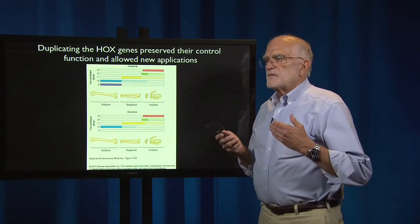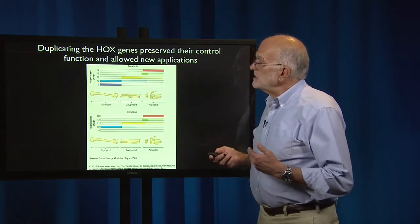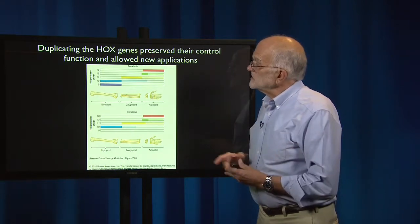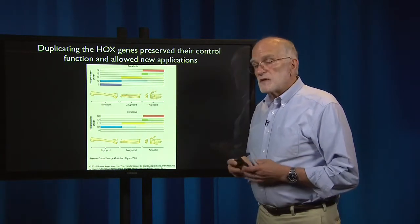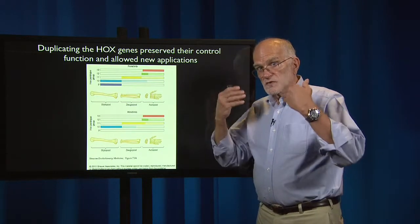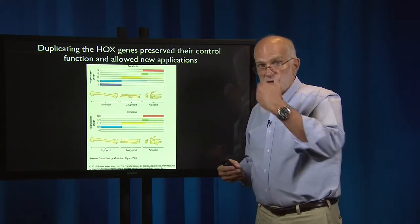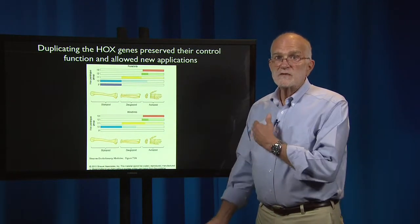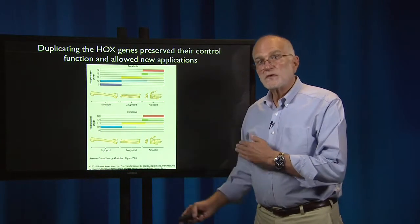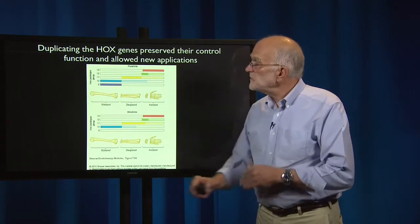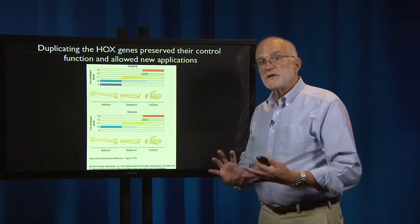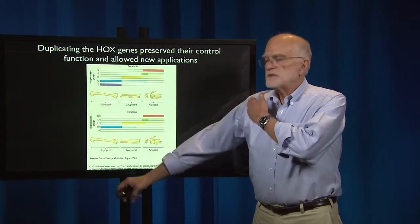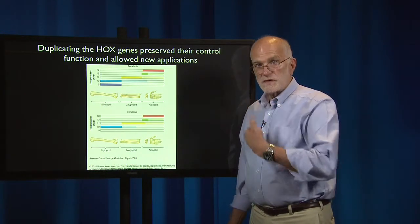Evolution took advantage of the existence of a developmental switch and a set of developmental rules for gene expression that originally had been set up to control the body axis — head, thorax, tail. When the vertebrate limb came along and was being developed out of precursors that were fins in fish, it simply took a duplicate copy and used the same kind of rules to lay down a sequence in the limb that is like the sequence in the body axis.